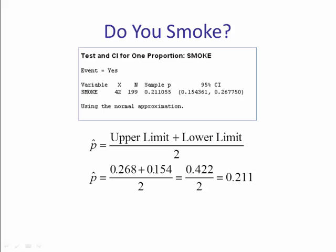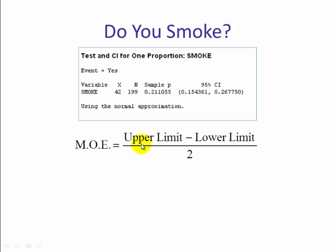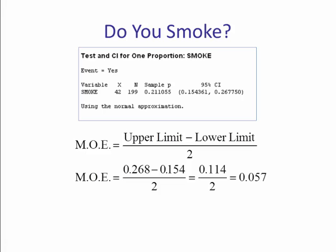Let's do the margin of error. The formula for the margin of error is the upper limit minus the lower limit divided by 2. So if we take the upper minus the lower and divide that by 2, we get 0.114 divided by 2, which is 0.057. So our margin of error is 0.057.